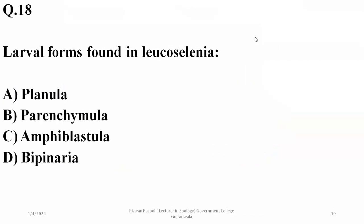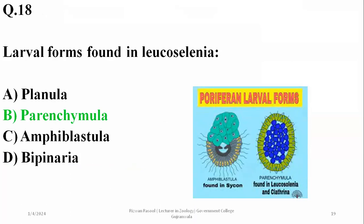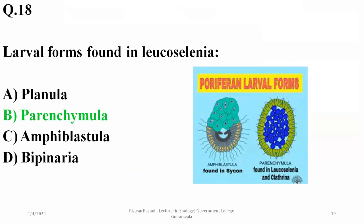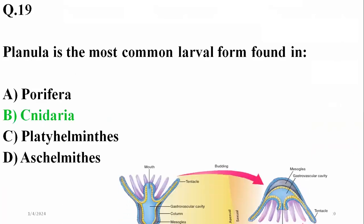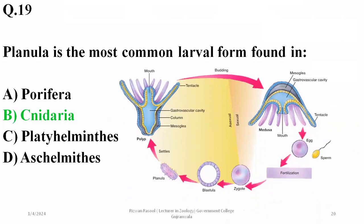Question 18: larval forms found in Leucosolenia are paired with coeloblastula larva found in Leucosolenia and Clathrina sponges, while in syconoid sponges the common larval form is amphiblastula. Planula is the most common larval form found in cnidarians, as seen in the life cycle diagram where planula is shown settling down to form polyp structures.